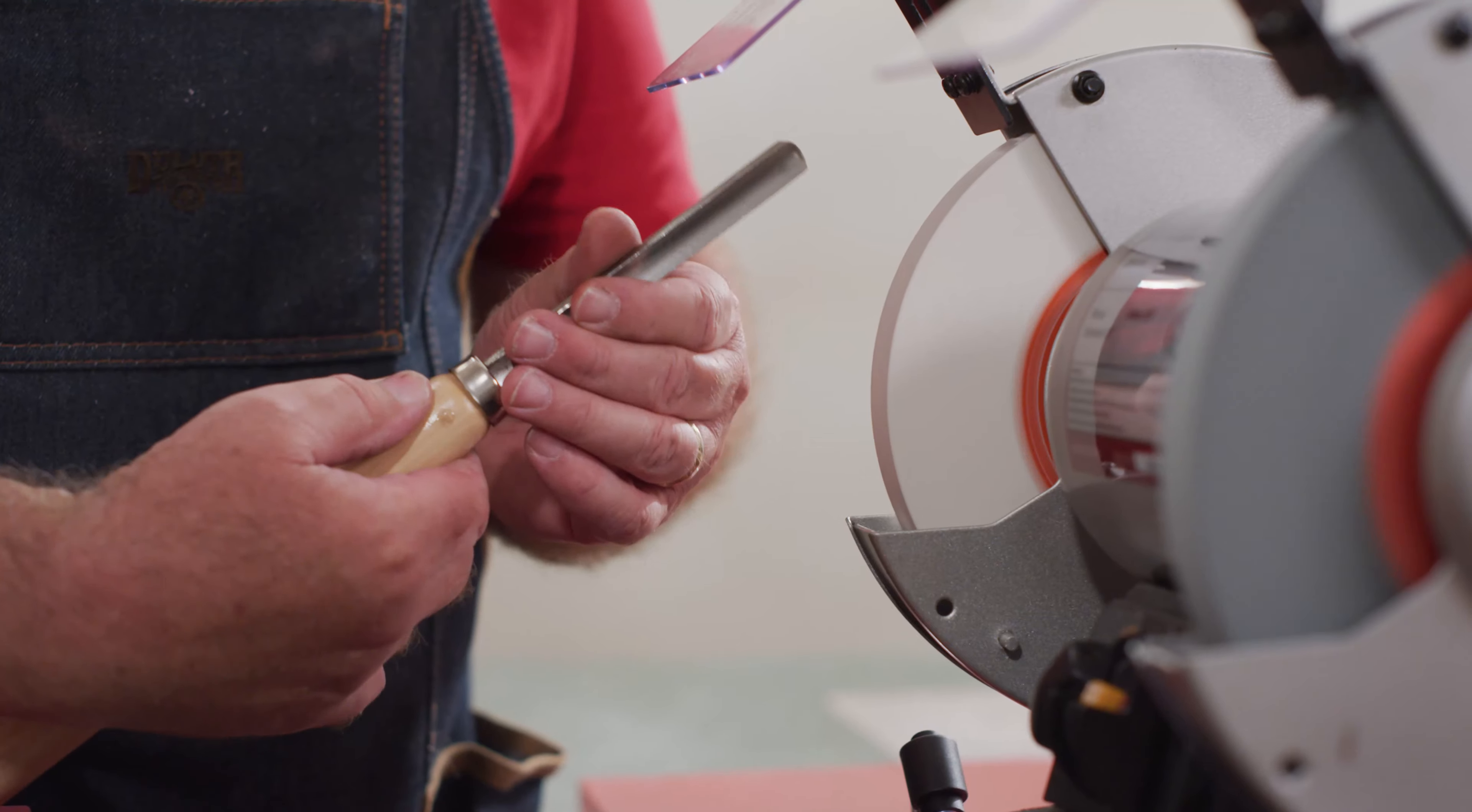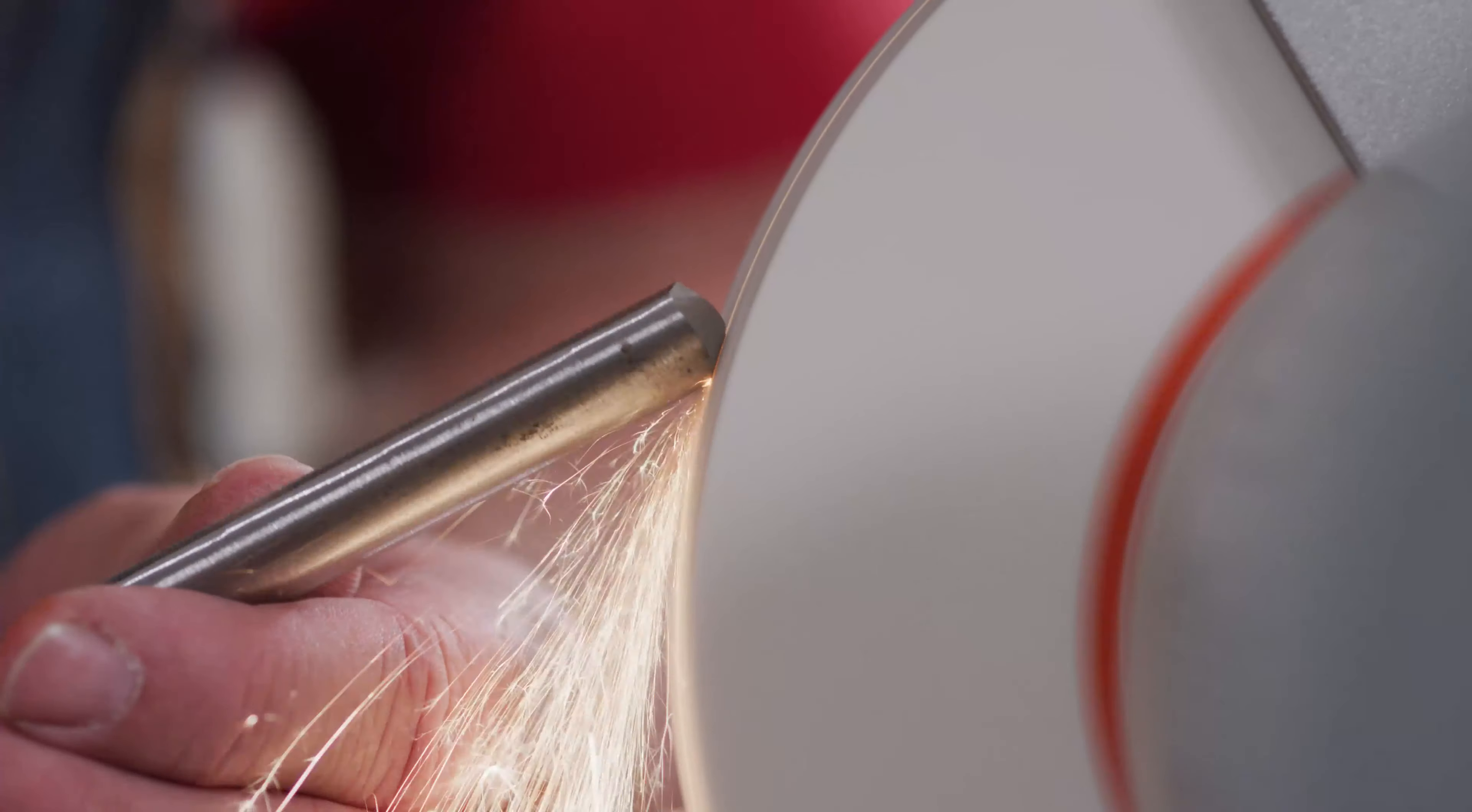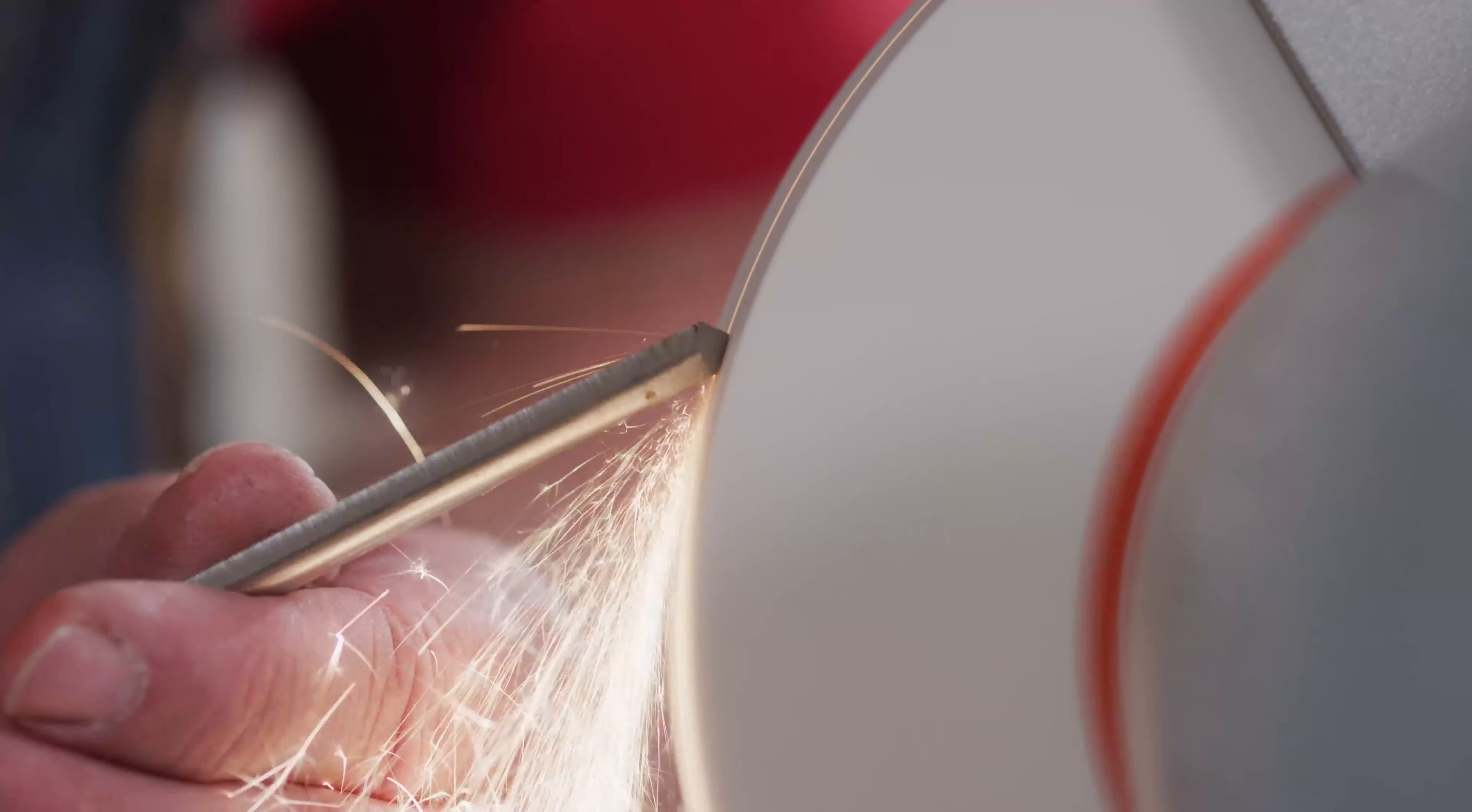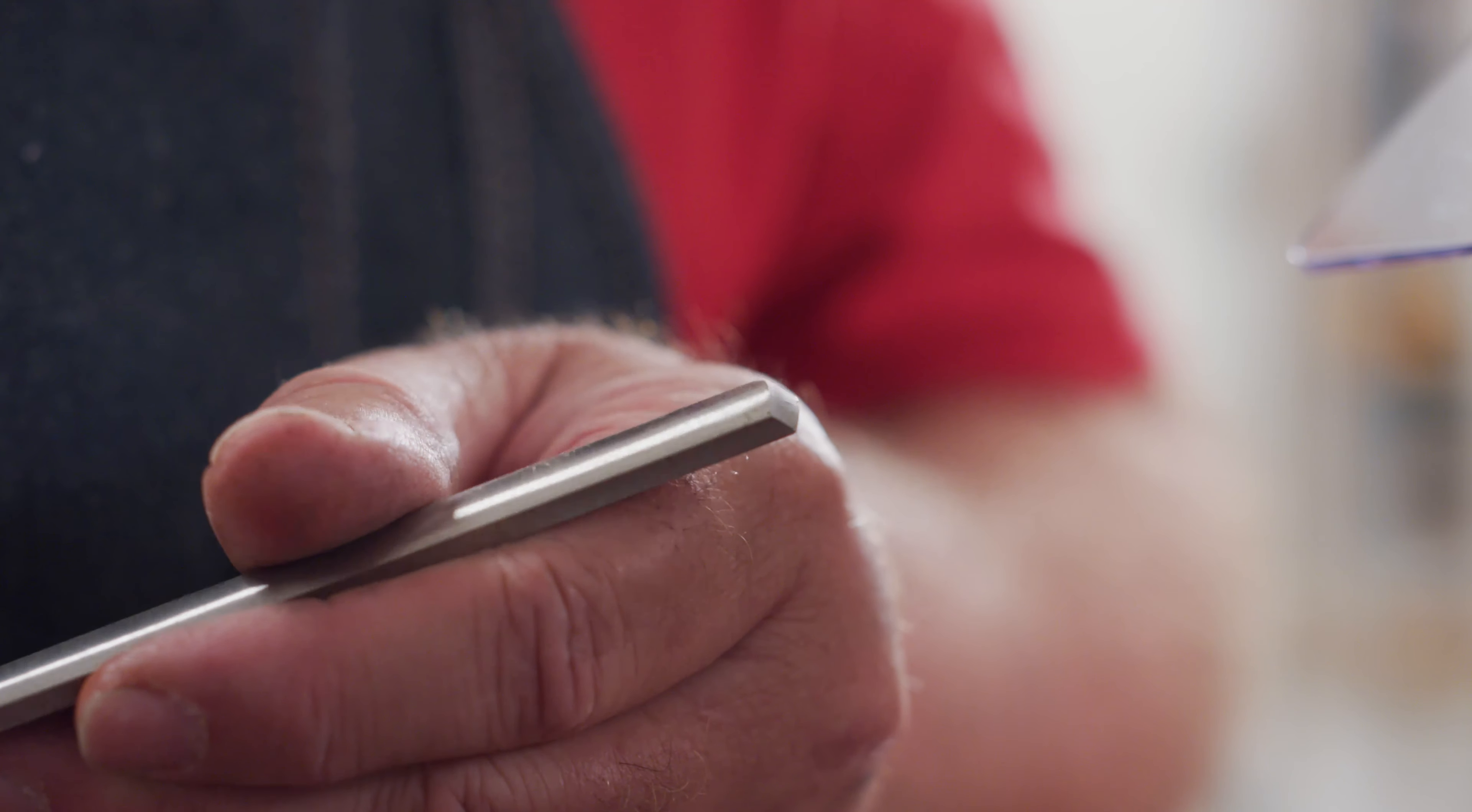With light, even pressure, roll the tool back and forth over the wheel. If it helps, use a marker to darken the beveled edge on the tool to determine the location of the grind to correctly position the extension arm.